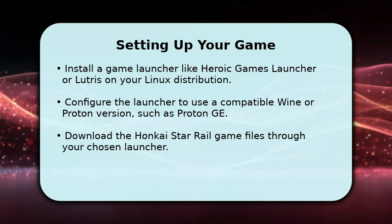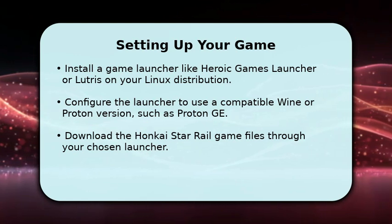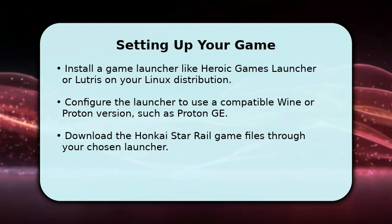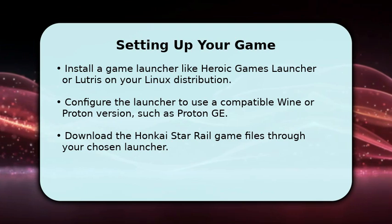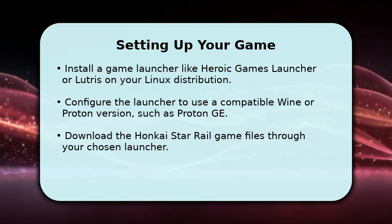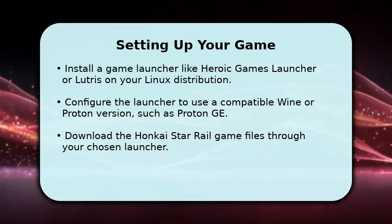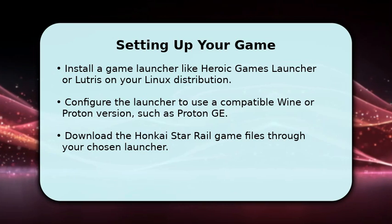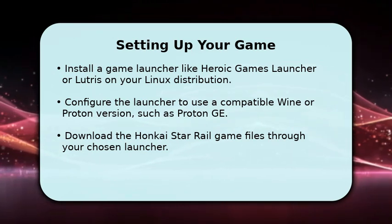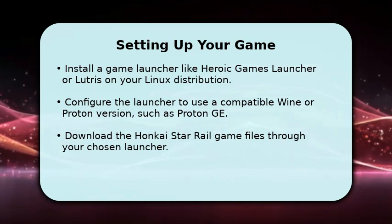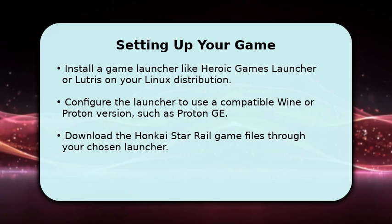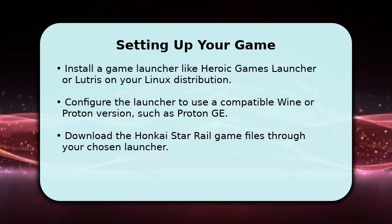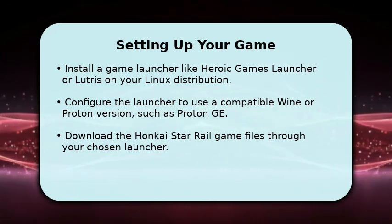Next, within your chosen launcher, select a suitable Wine or Proton version — often a community-maintained GE build — for optimal compatibility. Then simply download Honkai Star Rail through the launcher. Remember, some setups might need minor adjustments, like installing core fonts or configuring specific game paths.